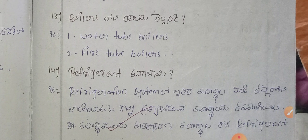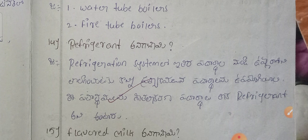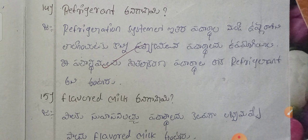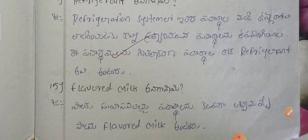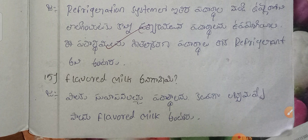Next are boilers and small boilers — water tube boilers. Then refrigerants: the refrigeration system is still in place. You can use the refrigerator with refrigerants. Refrigerants are used in refrigeration systems.